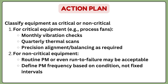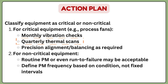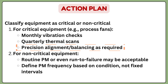The seventh question leads to the action plan — what can be done to prevent such failures. For critical equipment, this could include monthly vibration checks, quarterly thermal scans of the electrical panel, and scheduled preventive maintenance such as precision balancing or precision alignment. Depending on the type of failure, a targeted action plan is created for that particular equipment.